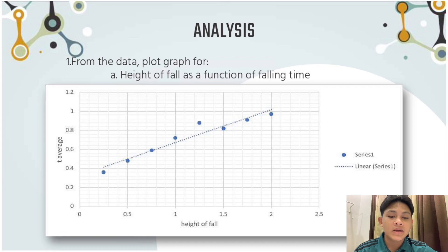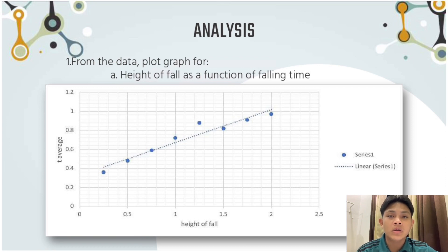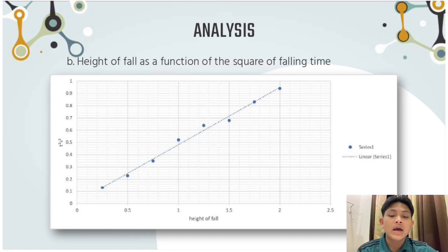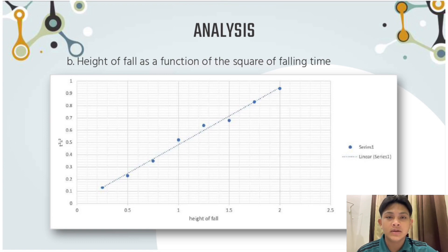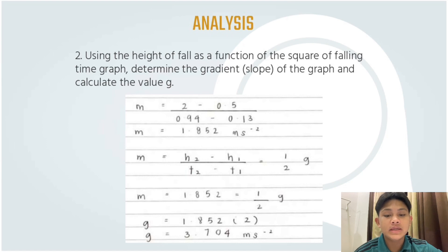For analysis number one, we plot a graph of height of fall as a function of falling time. My team has already plotted this graph using Google Excel, as shown on the slide. For graph b, we plot height of fall as a function of the square of falling time, which my team has also plotted using Google Excel.